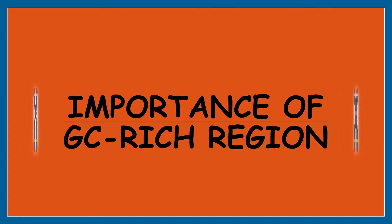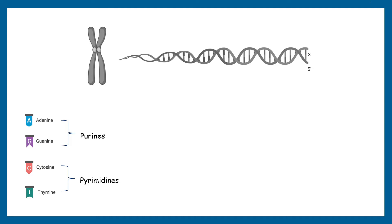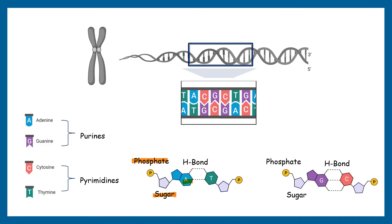Let's begin with the basic structure of our DNA. Our human genome comprises four types of nitrogenous bases: adenine, guanine, cytosine, and thymine, and they are categorized into purines and pyrimidines. One nucleotide structure includes a base, a phosphate, and a sugar, and our DNA is made up of a long chain of these nucleotides, often called a polynucleotide chain. Each base binds with another complementary base via hydrogen bonds — adenine forms two hydrogen bonds with thymine, and guanine forms three hydrogen bonds with cytosine.